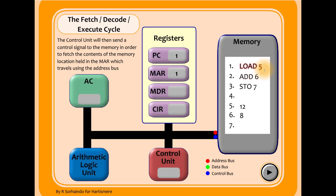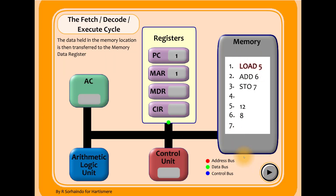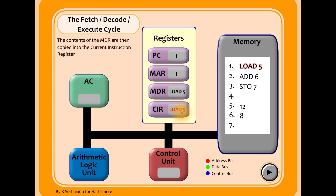We can see the green dot moving, showing that the data 'load five' — which is actually an instruction — has been fetched and put into the memory data register. Note that the CPU treats data and instructions the same in terms of how they are loaded. Next, 'load five' gets pushed into the current instruction register, which is the current instruction to be carried out. This is important because while that instruction is being executed, the memory data register will change, so the CPU needs to remember what that instruction is.